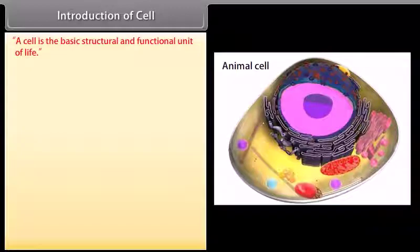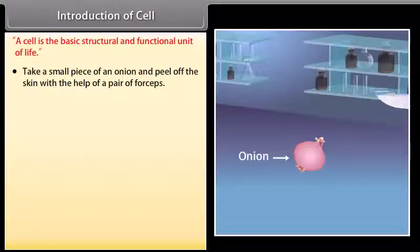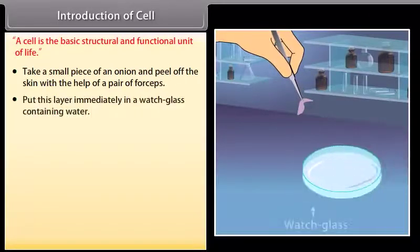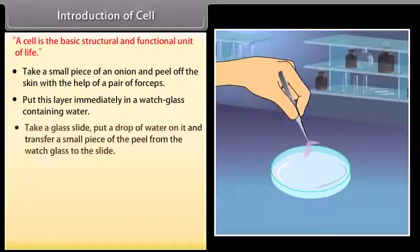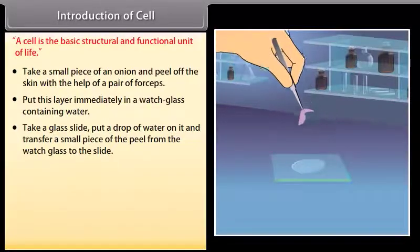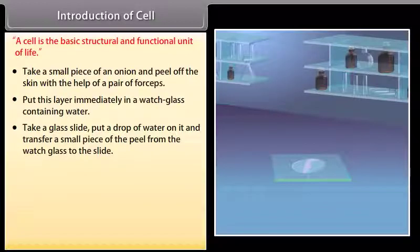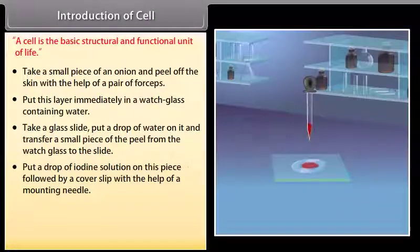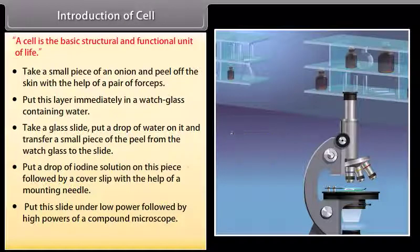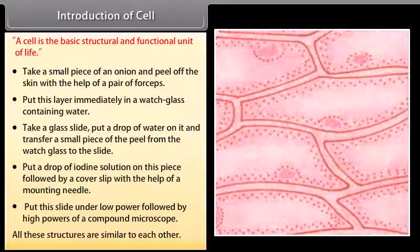Introduction of cell. A cell is the basic structural and functional unit of life. Experiment: Take a small piece of an onion and peel off the skin with the help of a pair of forceps. Put this layer immediately in a watch glass containing water. Take a glass slide, put a drop of water on it, and transfer a small piece of the peel to the slide. Put a drop of iodine solution on this piece, followed by a cover slip. Put this slide under low power followed by high power of a compound microscope. All these structures are similar to each other.